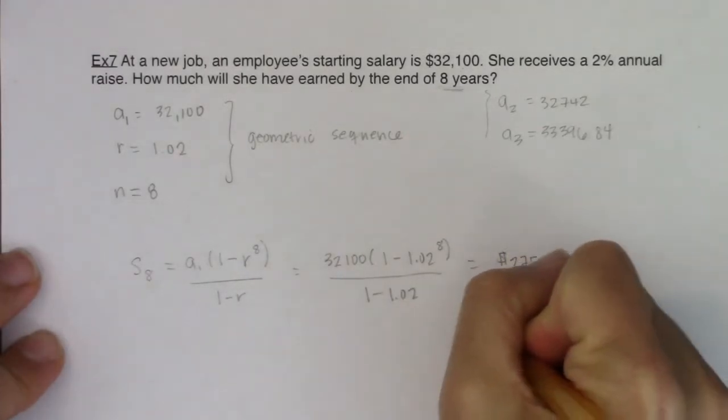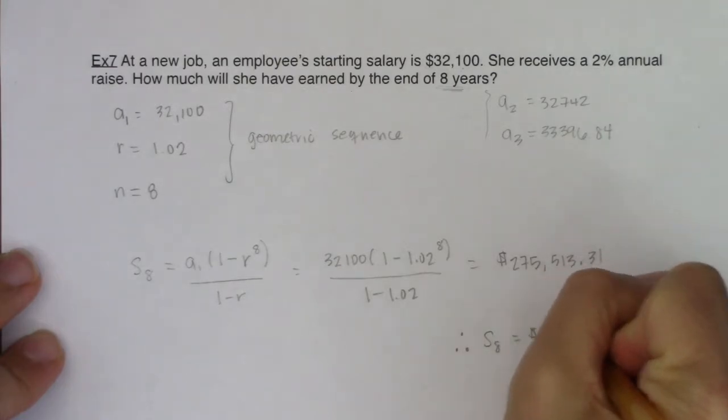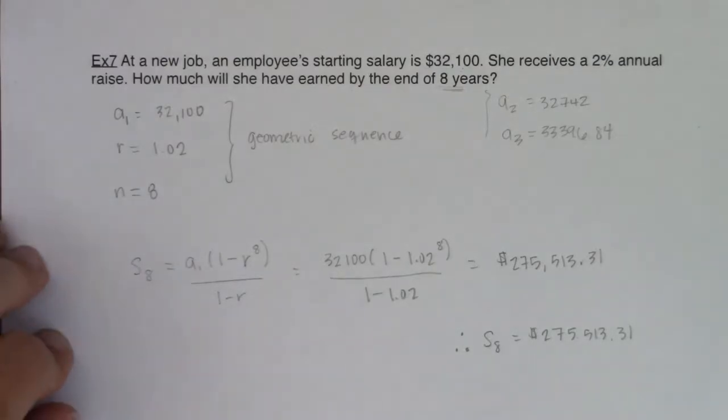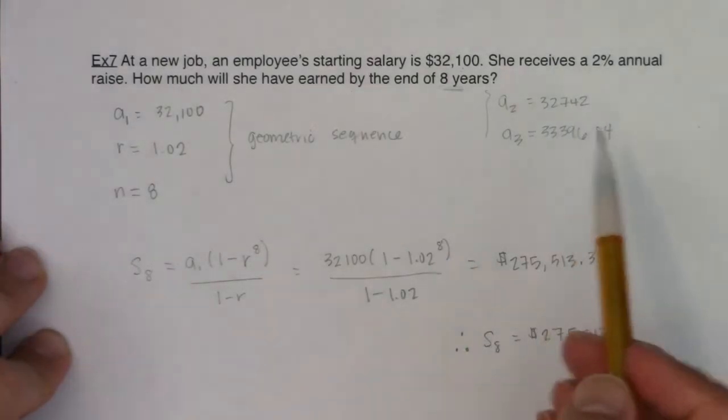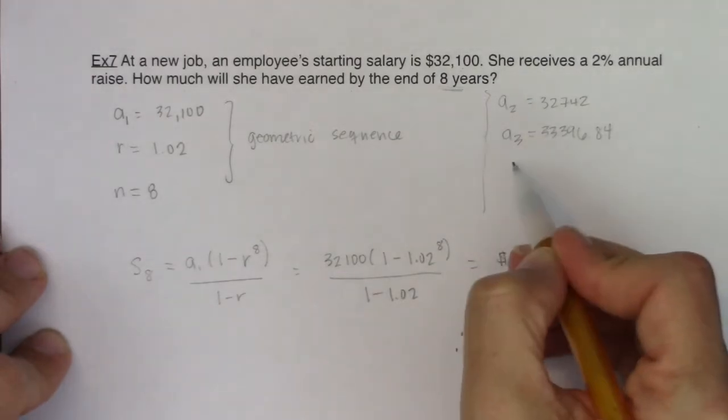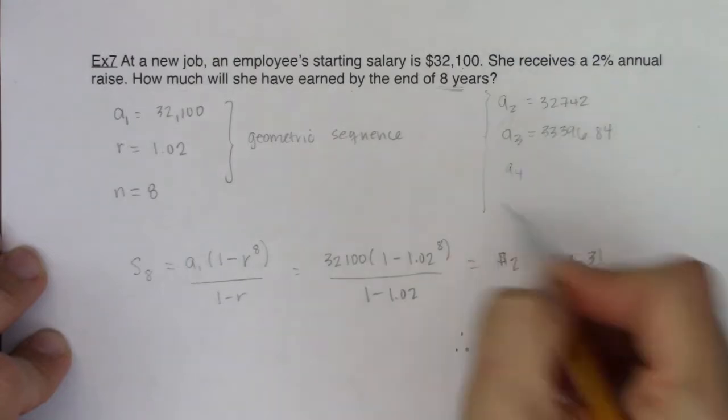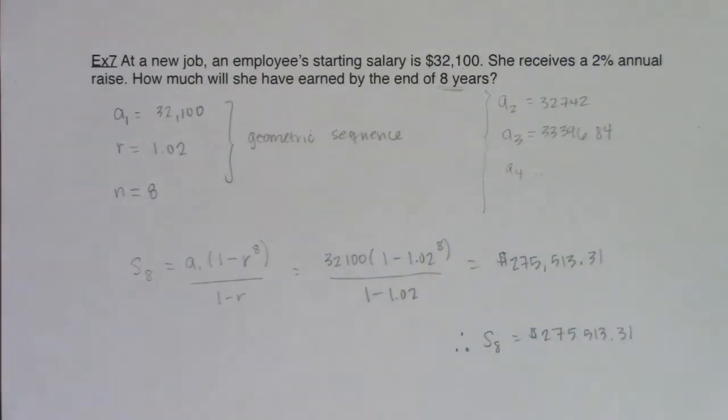So just so we're clear, s of eight will be $275,513.31. And when you see s of eight, we're adding the first eight terms of this geometric sequence. So if I wanted to continue this, I'd have to find a sub four, a sub five, a sub six, a sub seven, a sub eight, and I'd have to add all of those terms. And it's just faster to plug it into the geometric series formula.